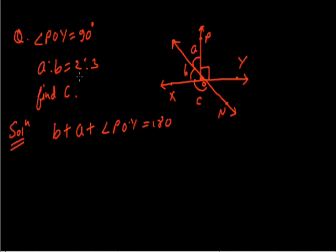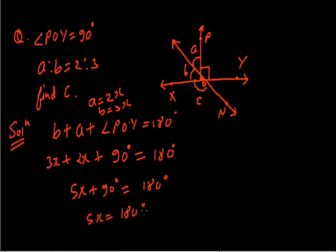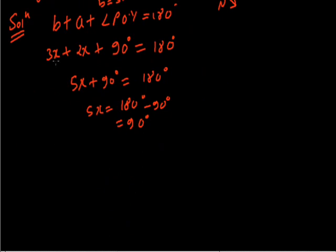As the ratio of A to B is 2 to 3, we assume A equals 2x and B equals 3x. We put the values of A and B in the equation: for B we put 3x and for A we put 2x. Since angle POY is 90 degrees, we get 3x plus 2x plus 90 equals 180 degrees. So 5x equals 90 degrees, and x equals 90 divided by 5, which is 18 degrees.